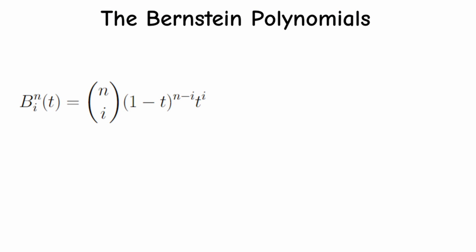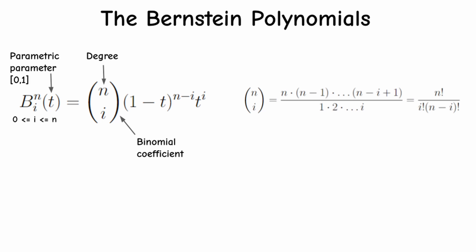The general form of the Bernstein polynomials is as follows. This looks a bit intimidating so let's break it down. What we are actually calculating here is a single polynomial i where i goes between 0 and n. n is called the degree of the polynomial. t is the parametric parameter which can go from 0 to 1. On the right hand side we first have the binomial coefficient n over i. This is a fraction where the numerator is the product of all numbers between n minus i plus 1 to n and the denominator is the product of all numbers from i to 1. Using the factorial notation we can write this more efficiently as follows. The binomial coefficient is multiplied by 1 minus t to the power of n minus i and finally by t to the power of i. So this is a single Bernstein polynomial.